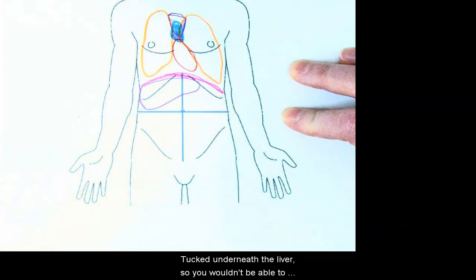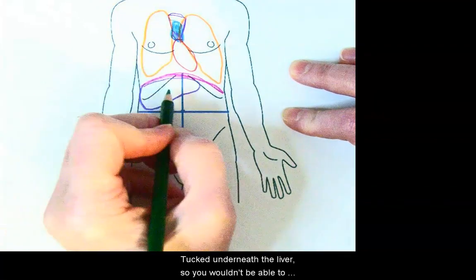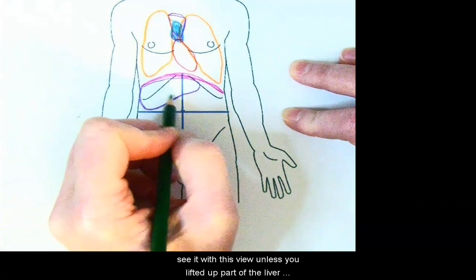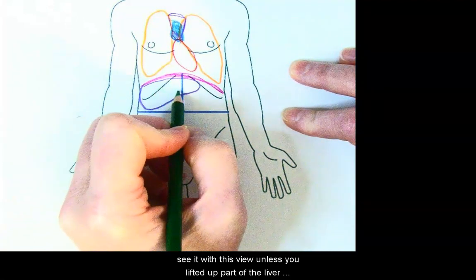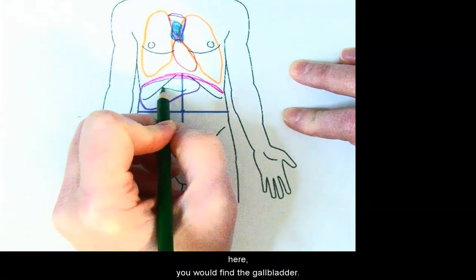Tucked underneath the liver, so you wouldn't be able to see it with this view unless you lifted up part of the liver here, you would find the gallbladder.